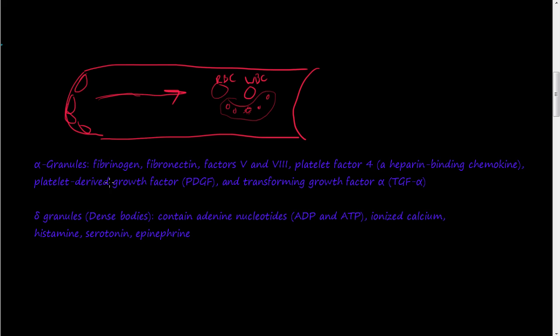The alpha granules contain fibrinogen, fibronectin, factors 5 and factors 8. And these are involved in the coagulation cascade, and we're going to talk about that next.